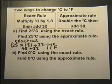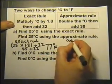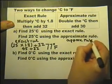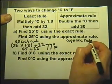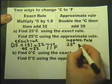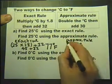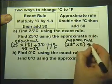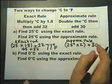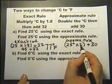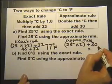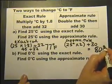Now let's do the approximate rule. We're going to take the same 25 degrees Celsius, double it, which means multiply by 2, and then add 30. The idea of an approximate rule is it's easy to do in your head or relatively easy. So 2 times 25 is 50, and 50 add 30 is 80 degrees Fahrenheit.